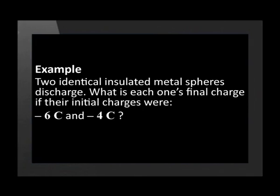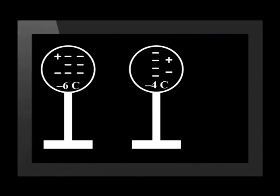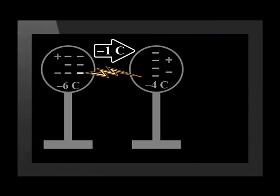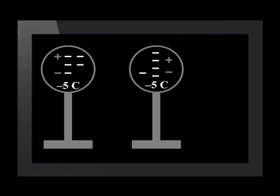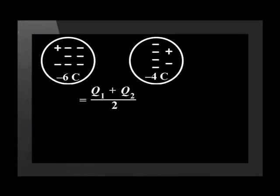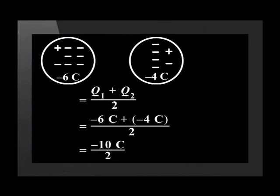Now we have an example where both spheres start negatively charged: one has a charge of negative 6 and the other negative 4 coulombs. Although both are negative, they do not have the same charge state because they are not negative to the same extent, so there is a potential difference between the spheres and discharge can occur from the more negative to the less negative sphere. Using the equation: −6 plus −4 equals −10, divided by 2, gives each sphere a charge of negative 5 coulombs after discharge.